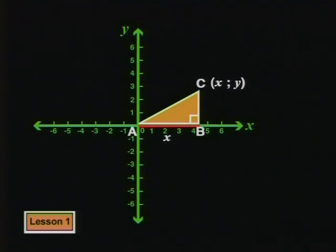This is the side next to or adjacent to the reference angle. The distance from B to C will be y units and this is the side opposite the reference angle. We've moved y units up from the axis to get to C.